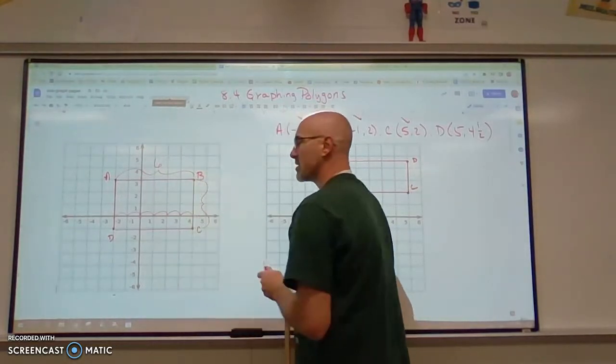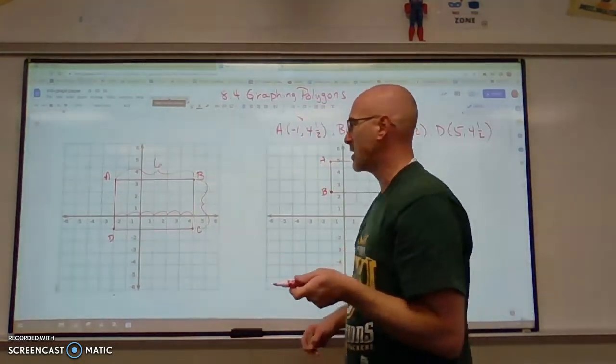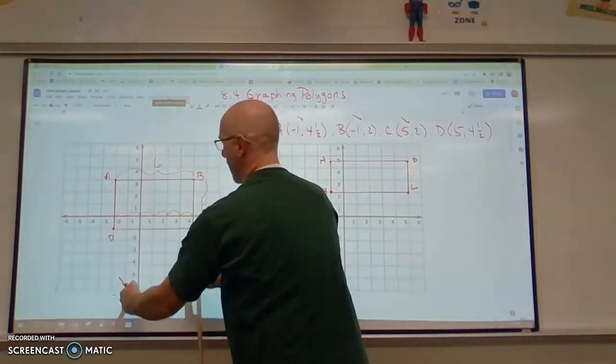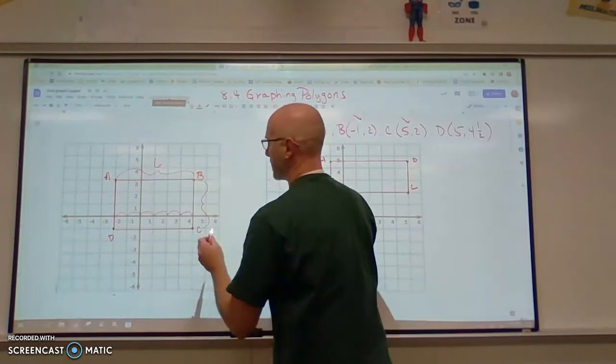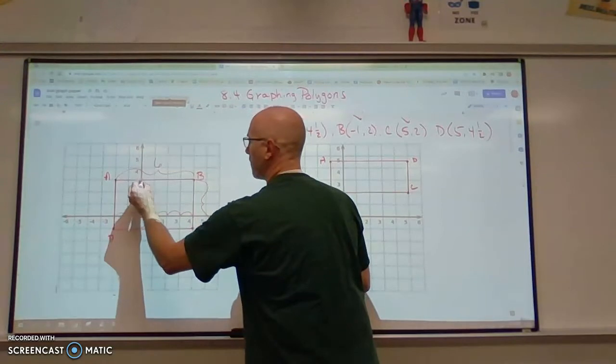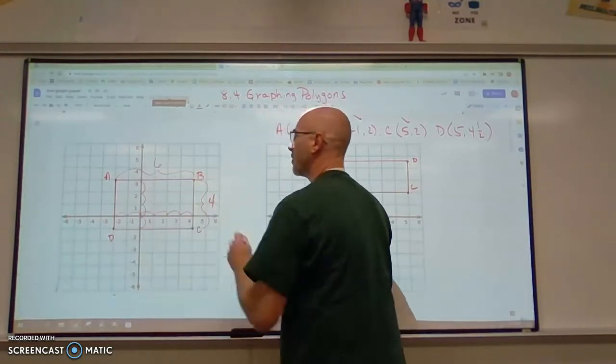Now we are going to find this distance, the width of this rectangle. And we are going to go parallel, this side goes parallel with the y-axis. So we are going to count down from negative one, one, two, three, four, up to three.